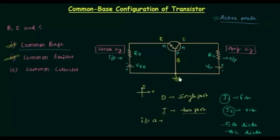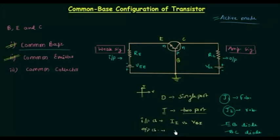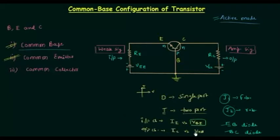The input current in this circuit is IE, the emitter current, and the input voltage is VBE. In case of output characteristics we have a plot between the output current IC and the output voltage VCB. The next thing is to find out the direction of currents IE, IB, and IC, and what are the voltages VBE and VCB.